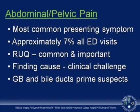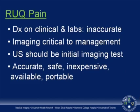Acute abdominal and pelvic pain is the most common presenting symptom to our emergency departments in North America today, accounting for approximately 7% of all such visits. Right upper quadrant pain is a common and important subset of these patients, but finding the exact cause is a clinical challenge. After the initial assessment, the gallbladder and bile ducts emerge as prime suspects, but diagnosis based on clinical assessment and simple laboratory tests is frequently inaccurate, so imaging is critical to management.